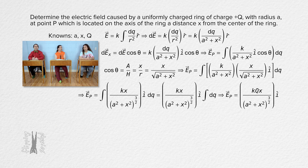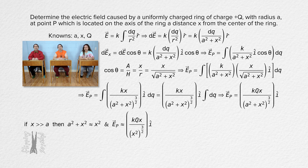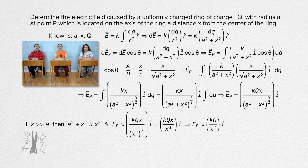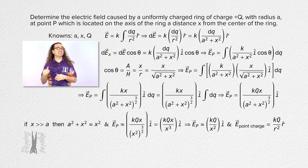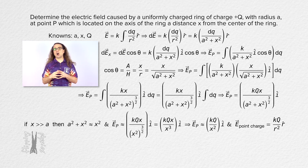If x is much, much larger than a, then a squared plus x squared is roughly equal to x squared. Substituting x squared into the equation gives x cubed in the denominator, but one of the x's cancels with the x in the numerator. So when x is much, much larger than a, the electric field at point P is roughly equal to the Coulomb constant times Q over x squared, times unit vector i — it acts like a point charge. This is always true: the farther you get from a finite continuous charge distribution, the more its electric field matches that of a point charge.